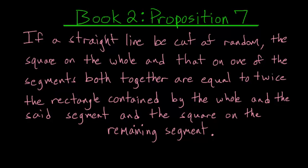For the seventh proposition of Book 2 of Euclid's Elements: if a straight line be cut at random, the square on the whole and that on one of the segments both together are equal to twice the rectangle contained by the whole and the said segment, and the square on the remaining segment.